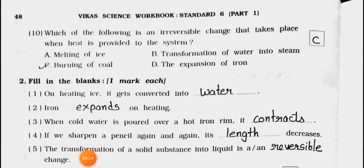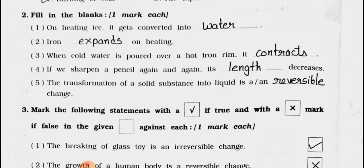Number 10. Which of the following is an irreversible change that takes place when heat is provided to the system? A melting of ice, B transformation of water into steam, C burning of coal, and D the expansion of iron. Answer is option C, burning of coal is an irreversible change that takes place when heat is provided to the system.